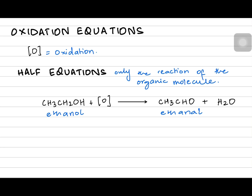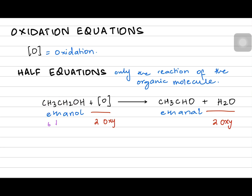In this reaction the number of carbons is balanced. There are two oxygens on the left side and one on the right, so we add one water as a product to balance oxygen. Now counting hydrogen: six on the left-hand side, and six on the right-hand side (four from CH₃CHO plus two from water). It is a balanced equation — ethanol making ethanal — using the distillation setup with warm and distill conditions.